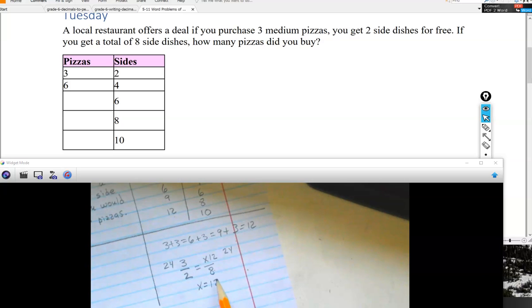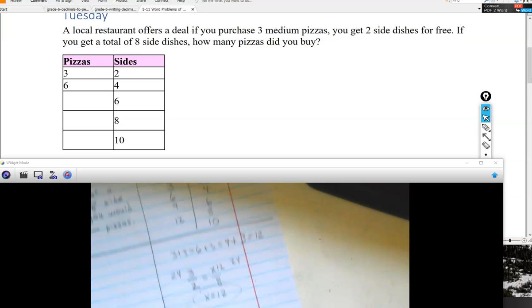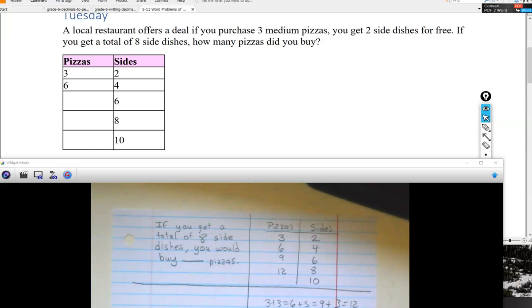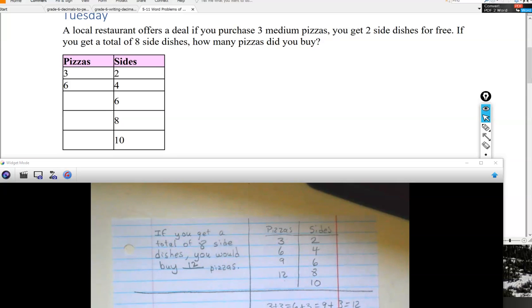So that's another way that you can find out that if you have eight side dishes, you would buy 12 pizzas. If you have any questions, let me know, boys and girls. And thanks for checking your word problem today with Mr. Yates. Bye-bye.